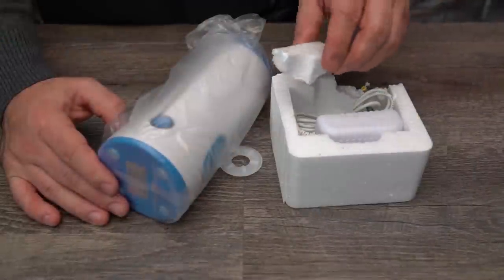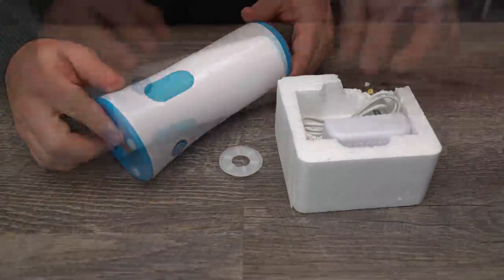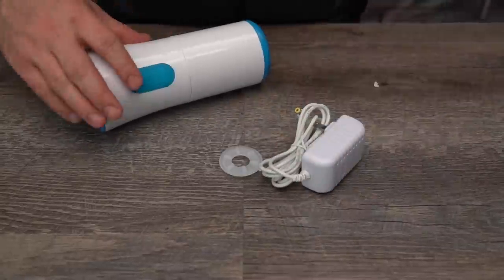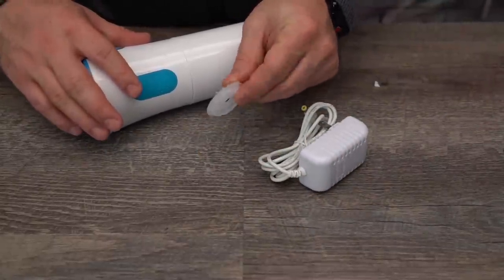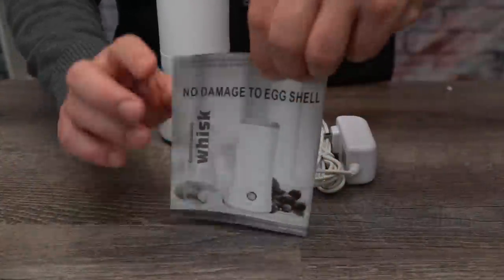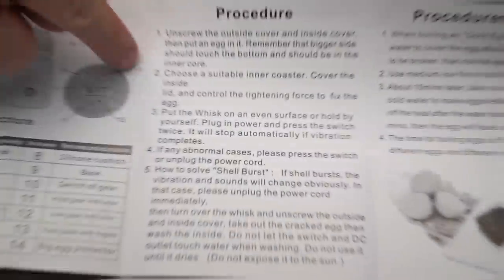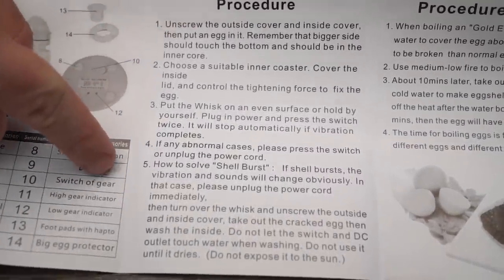After removing the contents of the box, we've got ourselves some mangled styrofoam, the Whisk itself, as well as a power adapter and a silicone ring that I'm sure we'll need later. We've also got some instructions covering the usage of the device as well as some procedures for boiling pre-scrambled eggs.